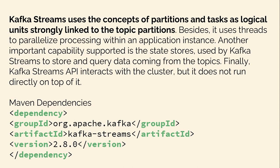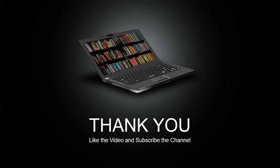Finally, the Kafka Streams API interacts with the cluster but does not run directly on top of it. If you need to include Kafka Streams in your Maven project, the artifact ID you can use is kafka-streams and the group ID will be org.apache.kafka. Thank you so much for watching today's video. If you think the videos are helpful, do like the video and subscribe to the channel.